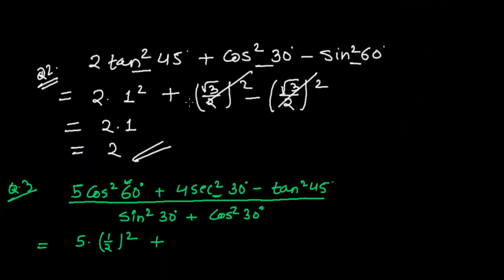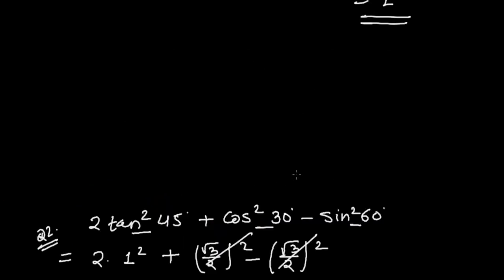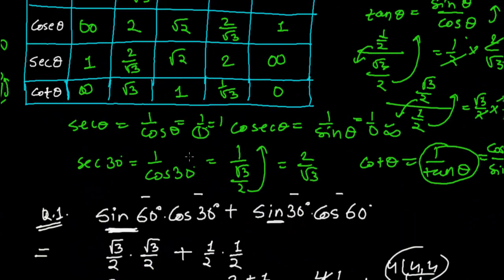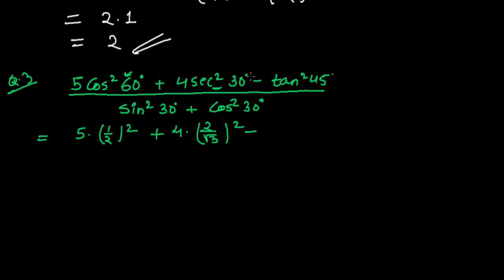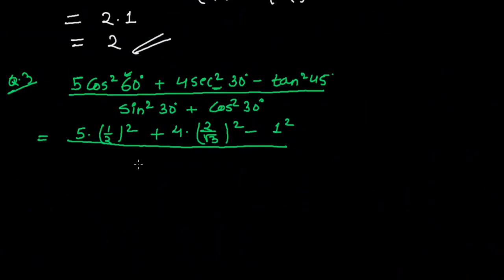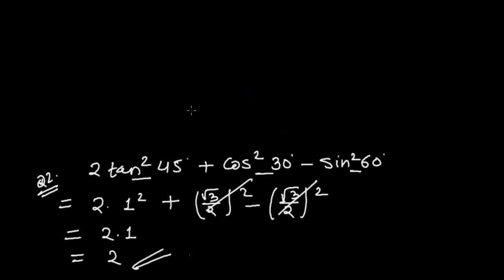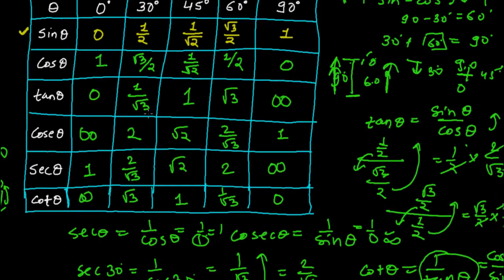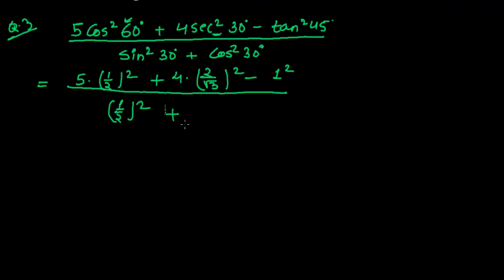So it will be 4 times (2 upon root 3) whole squared. Then minus tan 45 squared — tan 45 is 1, so that's 1 squared, divided by sin squared 30. Sin 30 is 1/2, so sin squared 30 is 1/4. Plus cos squared 30: cos 30 is root 3 upon 2, so cos squared 30 is (root 3 upon 2) squared.